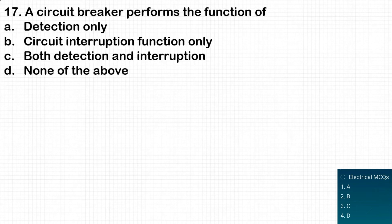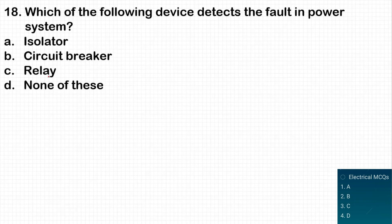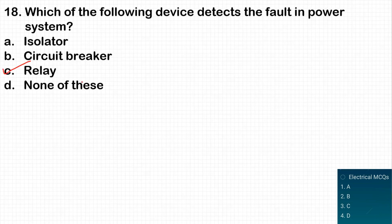The next question: which device detects the fault in the power system? As already discussed, the relay is the device that senses the fault. So relay is the device which detects the fault in the power system, and option C is the correct answer.